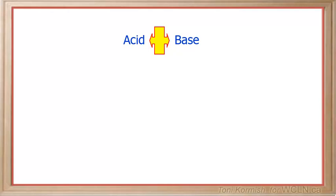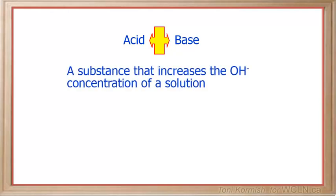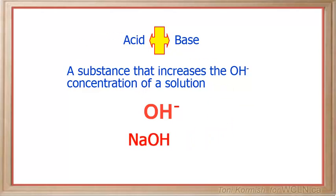The opposite of an acid is a base. A base is a substance that increases the hydroxide ion concentration of a solution. The symbol for the hydroxide ion is capital O, capital H, with a negative sign as a superscript to it, and it is always located at the back of a chemical formula. For example, the formula NaOH represents a base called sodium hydroxide. Note the OH at the back of the chemical formula.